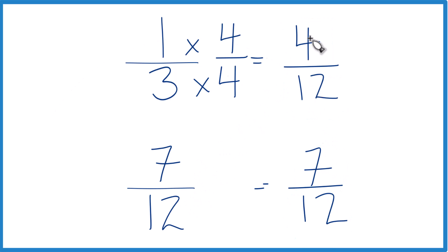So seven is greater than four, so seven-twelfths, that's greater than four-twelfths. Since these are equivalent, seven-twelfths, that's greater than one-third as well.